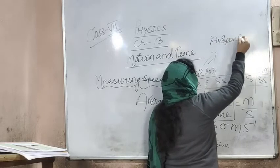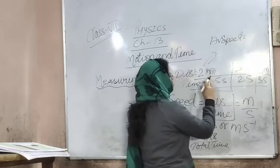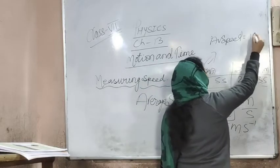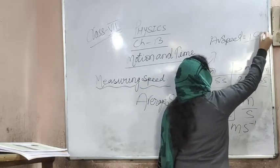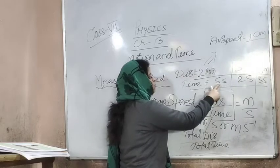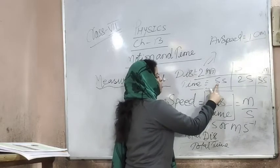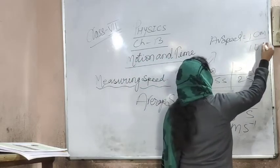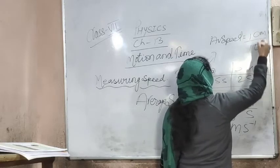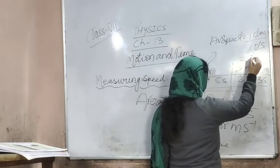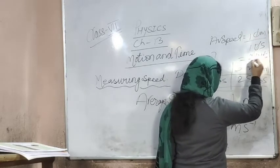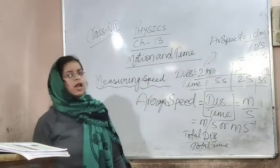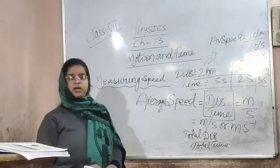What do we do for average speed? We add all the distances: 2 + 3 + 5 = 10. Total distance is 10 meters. Total time: 5 + 2 + 3 = 10 seconds. So average speed is 10 divided by 10, which is 1 meter per second. In this way, we find average speed.